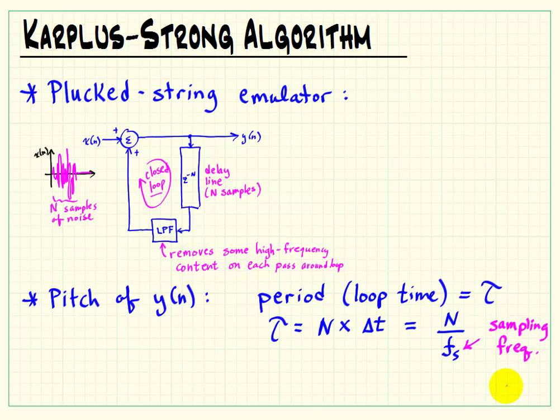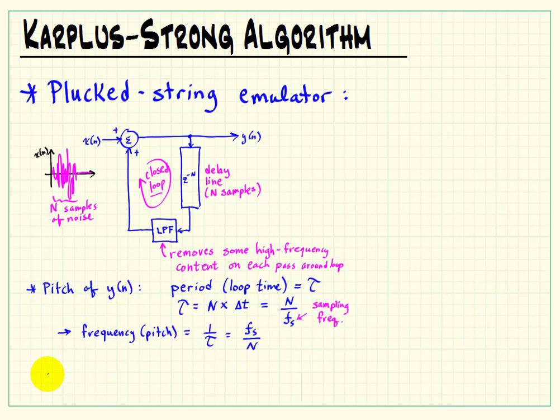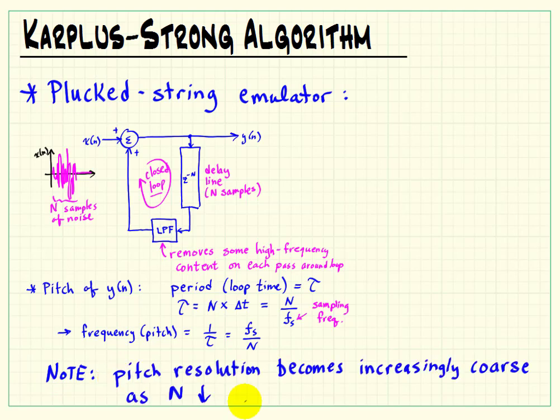We could rewrite that in terms of the sampling frequency if you like. The frequency then is the reciprocal of the period, the reciprocal of our loop time, which is the sampling frequency over N. You can see from that basic equation that a higher pitch requires a shorter delay line.